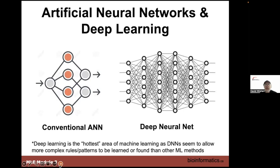A conventional neural net has an input, a hidden layer marked in pink-orange, and then an output — it really just has one hidden layer. The deep neural net has four, five, six, or seven hidden layers. That mimics what we see in the brain and allows more complex rules and patterns to be learned. Historically, we didn't go into deep learning because the computers weren't there — training a deep neural net requires a very powerful computer for days or weeks, versus a simple neural net which might only take seconds to minutes.